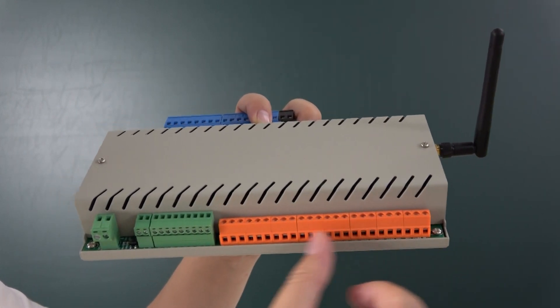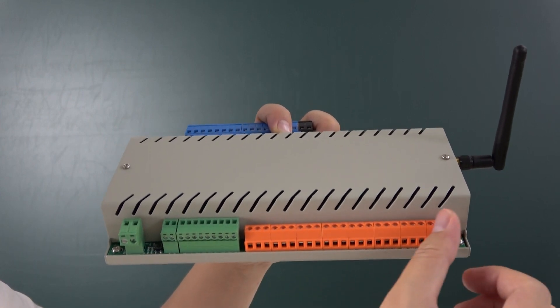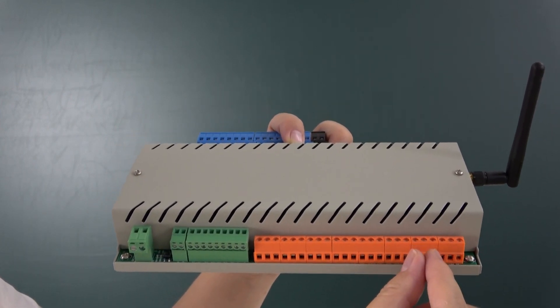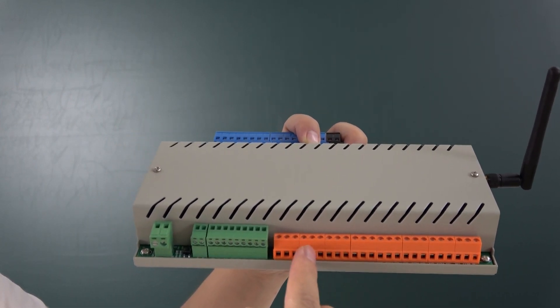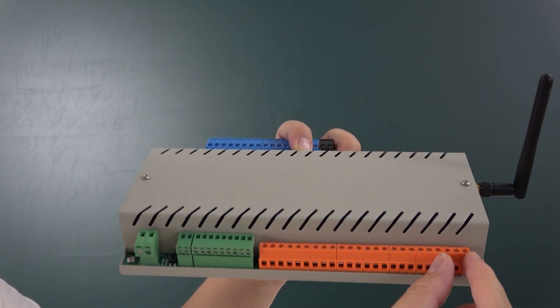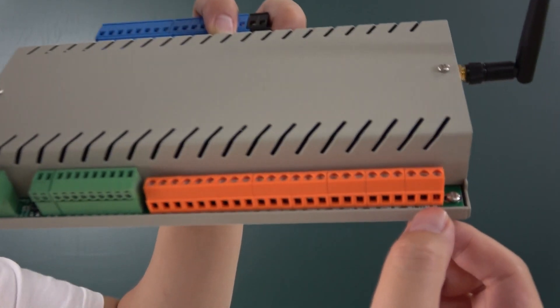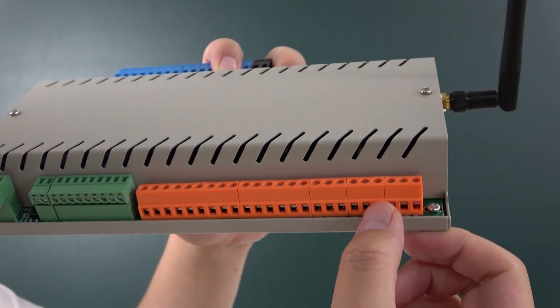And this orange section is the relay output. This is relay 1, 2, 3, 4, 5, 6, 7, 8. And every relay will have the common and the normal open and the normal close.